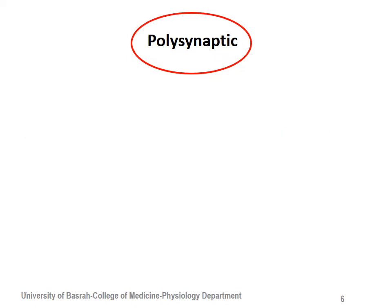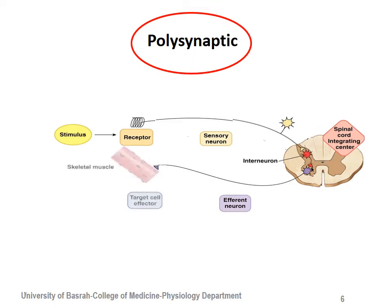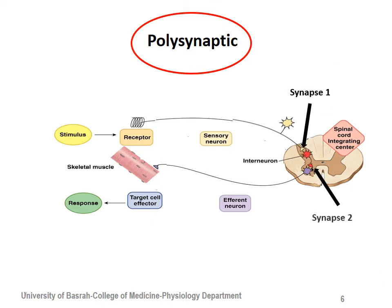On the other hand, polysynaptic means that when stimulation comes and signals enter the spinal cord integrating center, it will synapse with what are called interneurons. The interneurons then synapse again with the motor efferent nerves to pass to the muscle. So there is communication between the sensory nerves and interneurons, and then the interneurons communicate with the efferent motor neurons — multiple synapses, not just one.